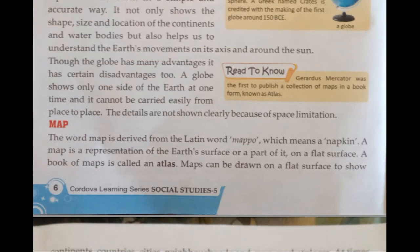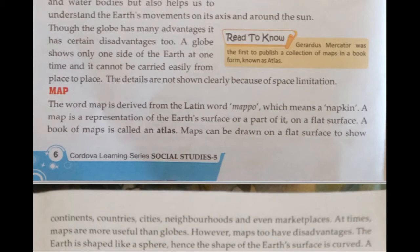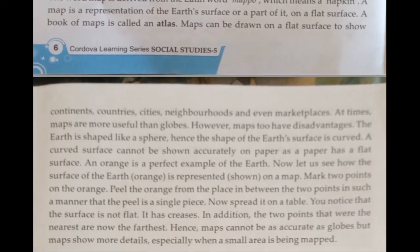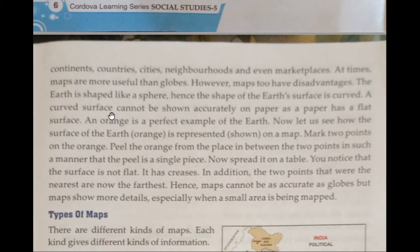The word map is derived from the Latin word 'mapu', which means a napkin. A map is a representation of the Earth's surface or a part of it on a flat surface. A book of maps is called an atlas. Maps can be drawn on a flat surface to show continents, countries, cities, neighbourhoods, and even marketplaces. At times, maps are more useful than globes.